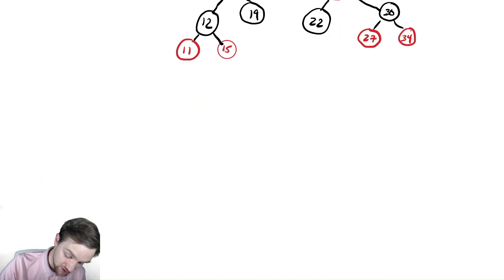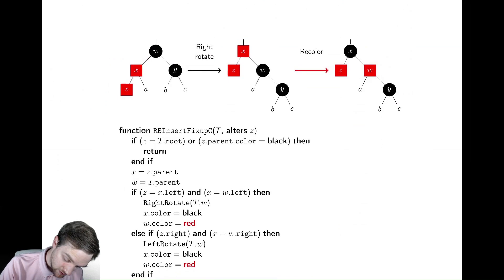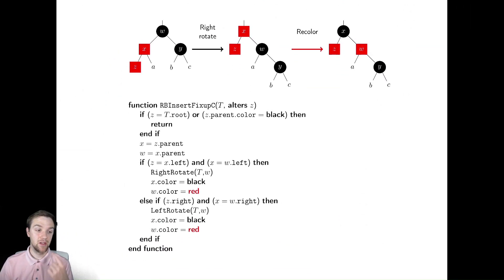Now let's look at the code for this. If we scroll down, we have the code. If we zoom out a little bit so we can see what's happening. If we are the root or our parent is black, then we aren't in the situation, so we aren't going to bother with it. Now we're going to assign the right variables. X is the parent of Z, W is its grandparent. We're going to perform a right rotation about the grandparent, and then color our parent to be black and our sibling to be red, exactly what we just said.